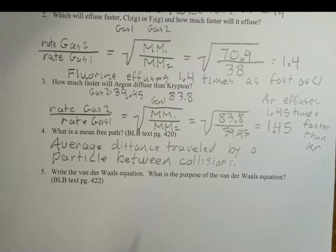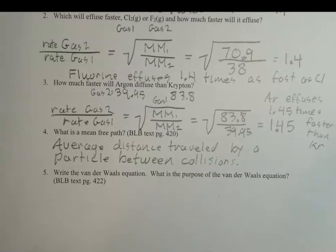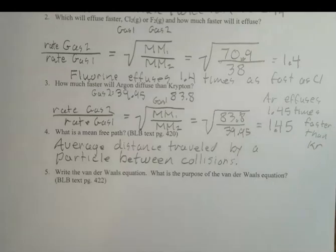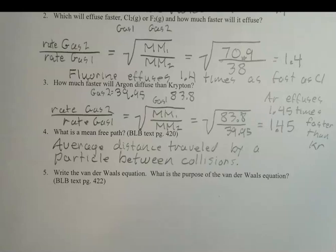Write the Van der Waals equation and understand its purpose — it's on the last page of your notes. Very simply, it corrects for errors in the ideal gas law. Gases behave ideally at low pressures and high temperatures: at low pressure they don't bump into each other very often, and at high temperature the molecules have a lot of energy so they don't want to stick together. Polar molecules want to stick to each other, but high temperature prevents that. Not all gases are at high temperatures and low pressures, so Van der Waals equation corrects for that.